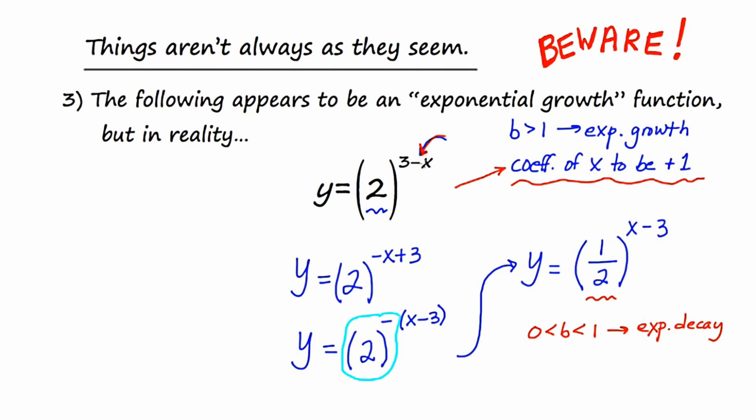Here it is negative 1, but after doing these manipulations, here it is positive 1. And then we can say, okay, our base is now 1 half, so it's exponential decay. And one last thought. Because of this right here, we know that this graph has moved 3 units to the right.